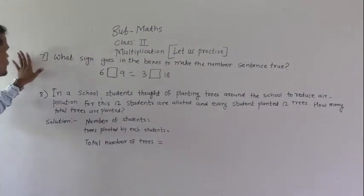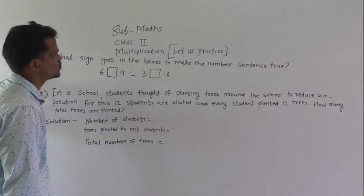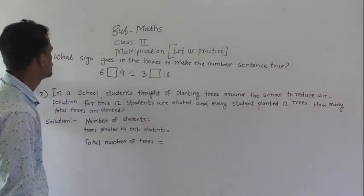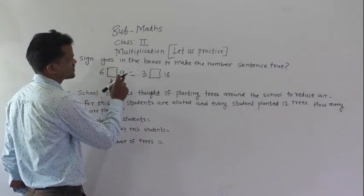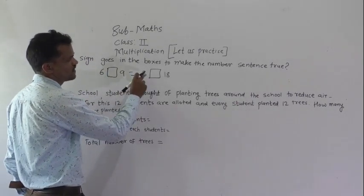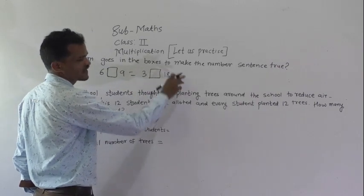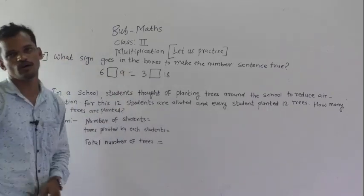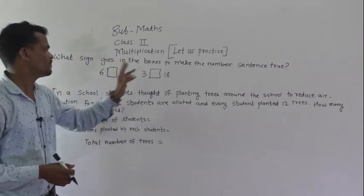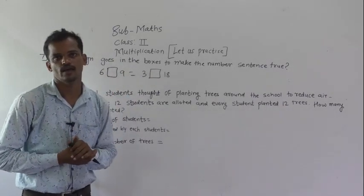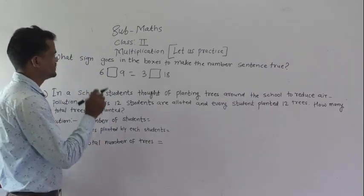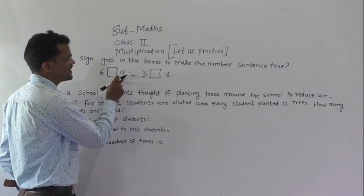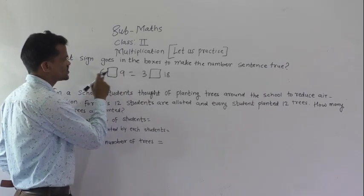What sign goes in the box to make the number sentence true? See here, 6, there is 1 box, 9 is equal to sign is there, then 3, 1 box is there and 18. We shall understand in both boxes the same sign should we have. Now just think, if I put here plus sign, so 6 plus 9, 6 plus 9, 15.